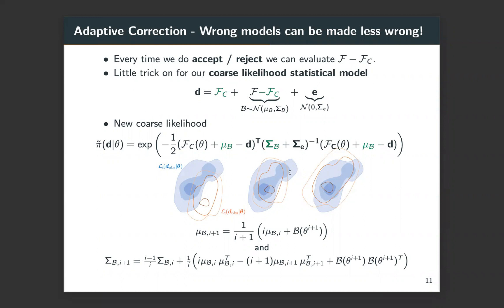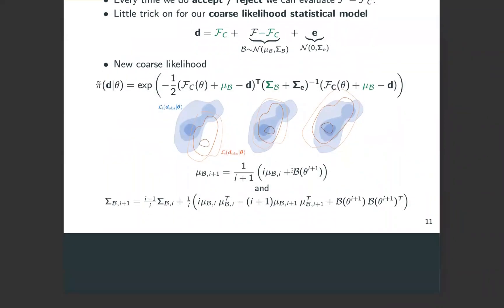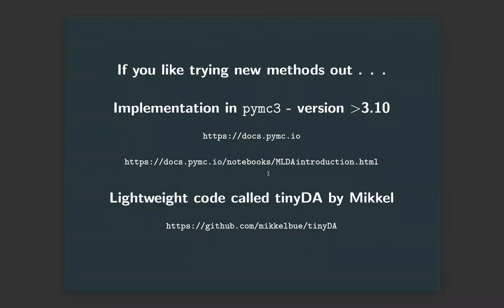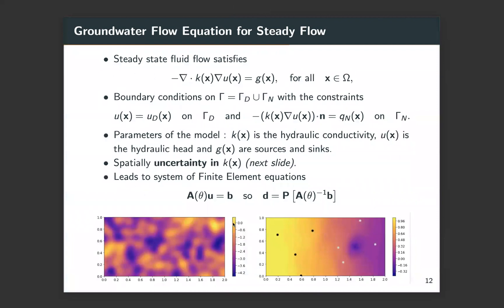On the fly, we're learning how to correct our machine learning coarse approximation, and it gets better and better the more we sample. We've implemented these methods in PyMC3, which is a well-known probabilistic programming language, under something called multi-level delayed acceptance. My PhD student Mikkel has also written a nice lightweight code called TinyDA, which you can instantly set up and play around with these problems. I'm going to talk about one of his problems quickly and then open for questions.